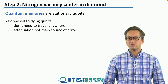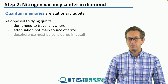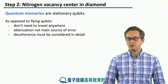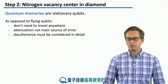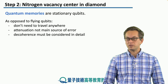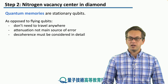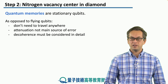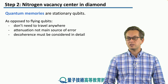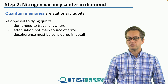Attenuation is not the main source of error. But we have to be very careful when thinking about the decoherence of the quantum memory. We would like to preserve the quantum information stored in the memory for as long as possible, and we have to be careful about considering the details of all the possible decoherence channels, such as random Pauli errors, relaxation errors, and so on.